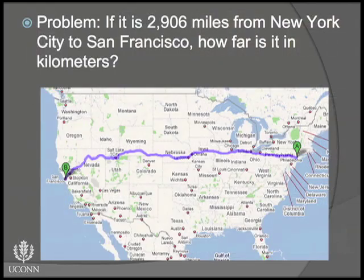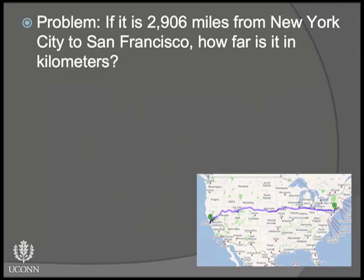Let's consider a simple problem of converting distance units from the English system to the metric system. To do any of these kinds of problems, first you have to find a starting point. The starting point will nearly always be the unit of the value you have been given. In this case, it is miles.